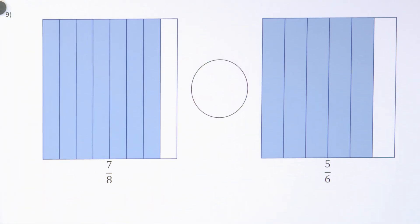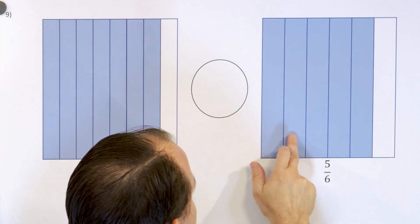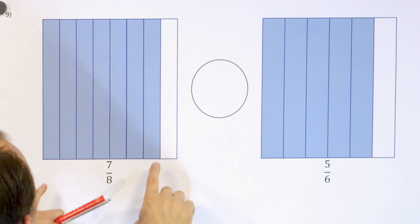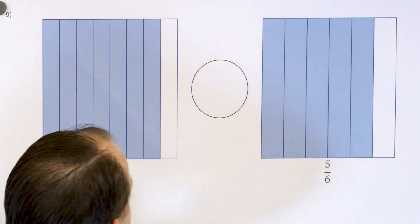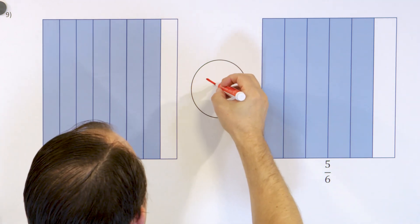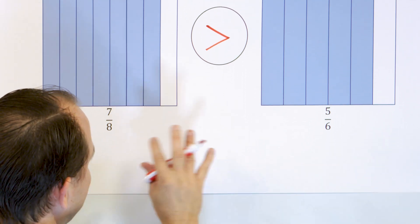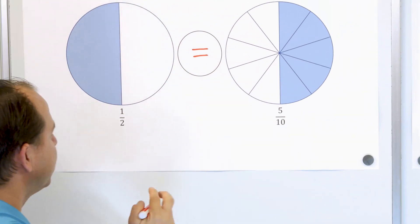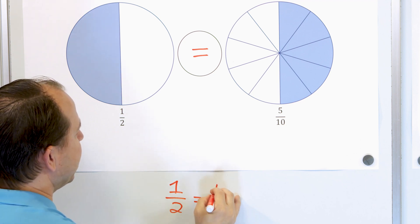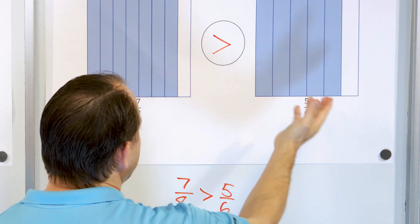Now we have seven eighths — seven out of eight pieces — compared to five sixths — five out of six. Which one's bigger? The blue area is bigger for seven eighths than for five sixths, so five sixths is the smaller fraction and the arrow points that way. We say seven eighths is greater than five sixths. Without drawings, we'd write: seven eighths is greater than five sixths, and one half is exactly the same as five tenths.